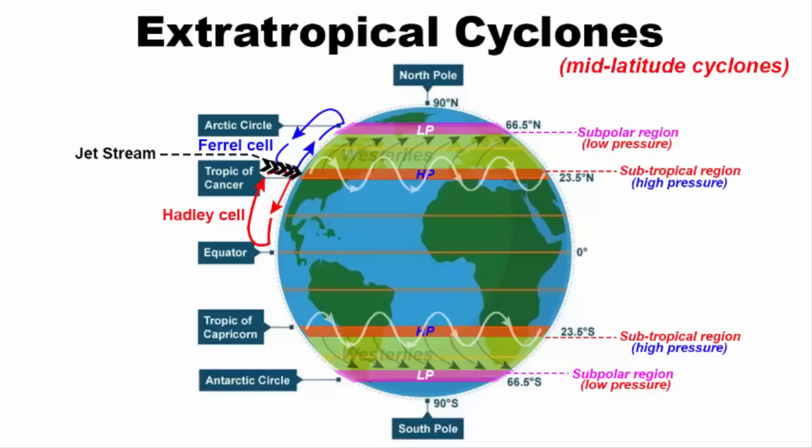There is another jet stream that sits at the subpolar region. In between the Ferrel cell and polar cell. And we know here the air rises. That is why this region is a low pressure zone. That means jet streams form in between cold polar air and warm tropical air of both the hemisphere. Even the jet stream gets deflected by the Coriolis effect. But not much.